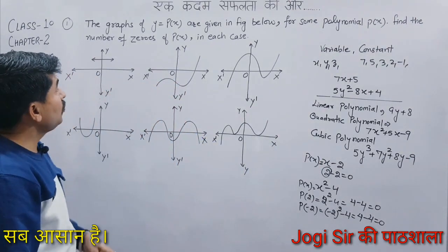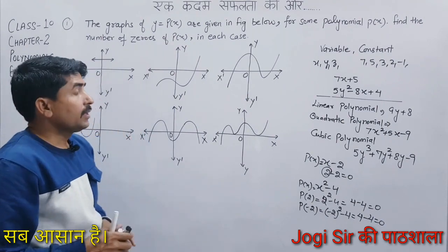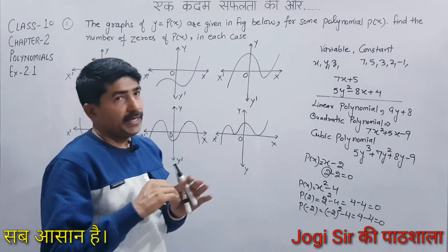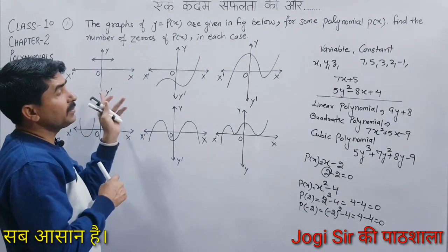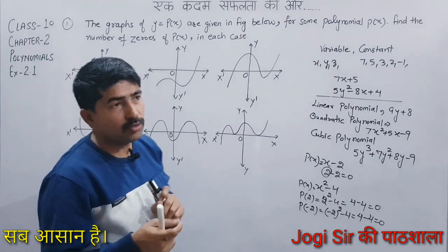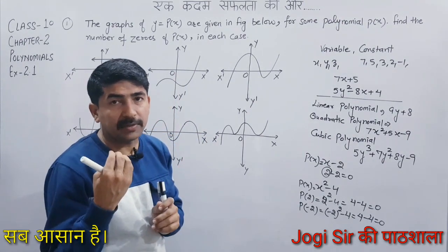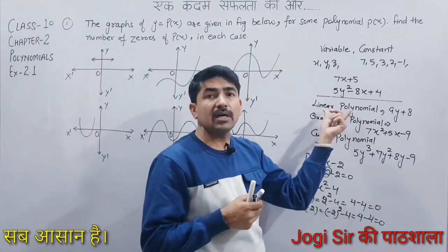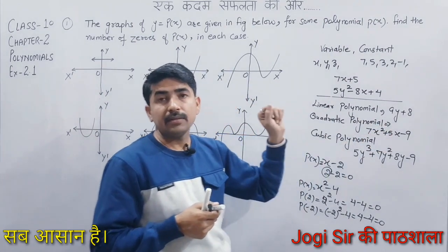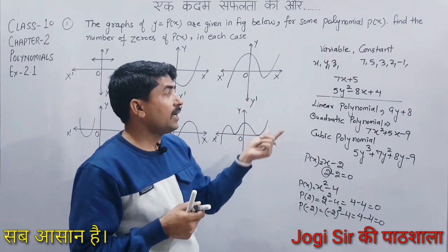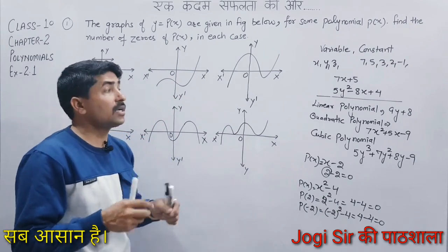Now, how can we find the number of zeros of any polynomial from its graph? This is the geometrical representation. We have the x-axis and the y-axis. We need to see how many points the line or curve cuts on the axis. A linear polynomial, when drawn, gives a straight line. A quadratic polynomial gives a curve called a parabola.